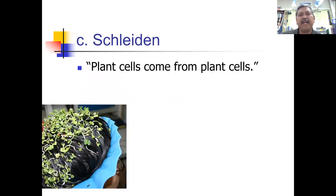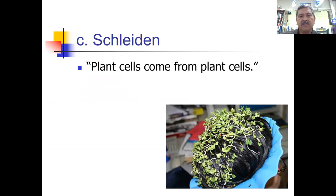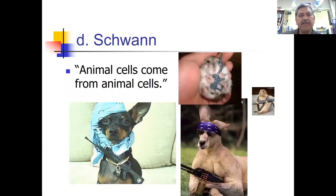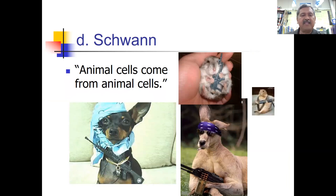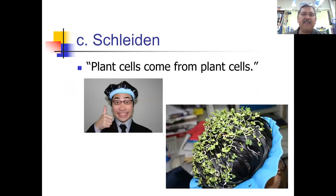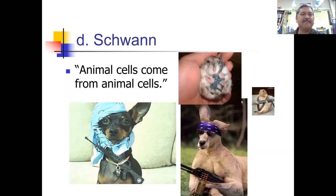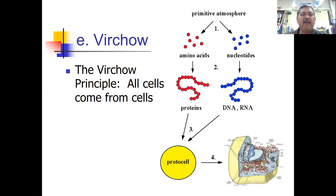Schleiden came up with the idea that plant cells come from other plant cells, and animal cells come from animal cells. About a year after Schleiden, Schwann came up with the same idea for animal cells. Finally, Rudolf Virchow put it all together and said all cells come from cells — now known as the Virchow principle.